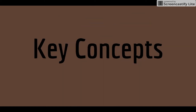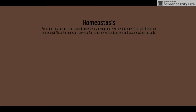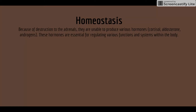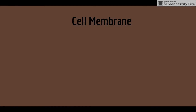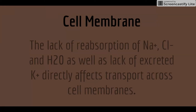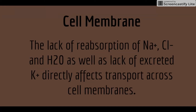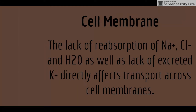To review the key concepts, we'll start with homeostasis. Because of the destruction of the adrenals, they are unable to produce various hormones. These hormones are essential for regulating various functions and systems within the body. Regarding cell membranes, the lack of reabsorption of sodium, chloride, and water, as well as a lack of excreted potassium, directly affects transport across cell membranes.